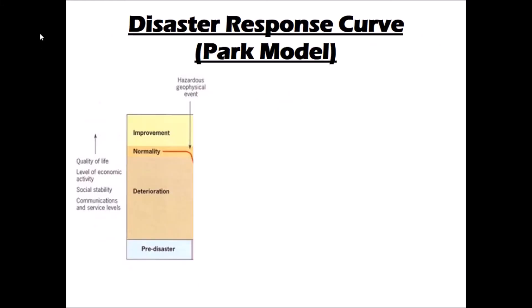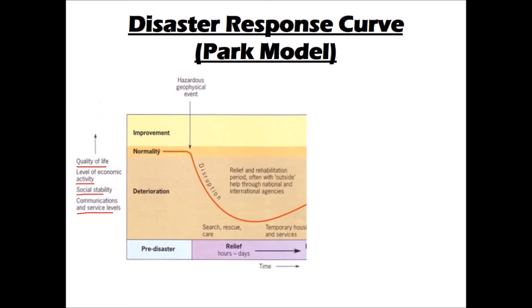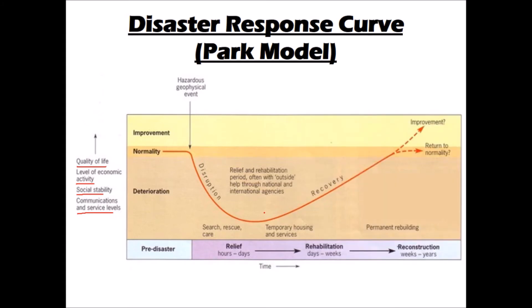Another model we can use to think about disaster management and response is called the disaster response curve, also known as the PARC model. The PARC model is a representation of the measurement of a few key things within a society — maybe the quality of life, the level of economic activity, social stability, levels of communication and services. We measure that on the y-axis, and over time we chart through the stages of impact and recovery to any particular natural disaster.